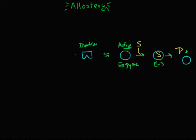An allosteric modifier will bind to the other site. In this case, we have an allosteric inhibitor that binds to the inactive form and prevents the enzyme from catalyzing the reaction. This is one type of allosteric enzyme.